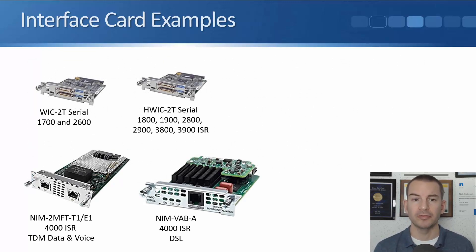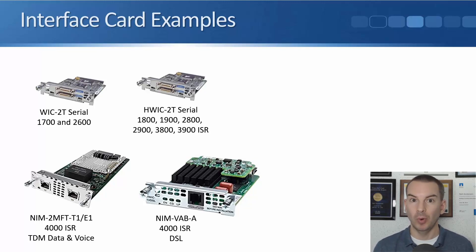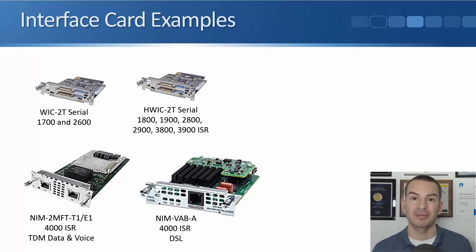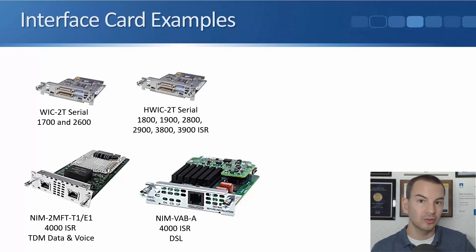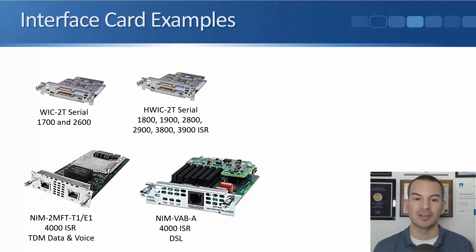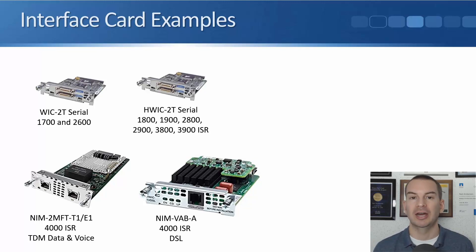To give you an example, at the top we've got a couple of serial cards. We've got the WIC-2T, which is compatible with the 1700 and 2600 platforms, and next to that the HWIC-2T, which is compatible with the 1800, 1900, 2800, 2900, 3800, and 3900 ISRs. Looking at these two, they look exactly the same — they're both for serial connections, which we would often use for slower speed leased lines or Frame Relay. But one fits one type of platform and the other fits different platforms. If you order a WIC-2T instead of the HWIC-2T it won't work, so be really careful when ordering because often there's just a single letter or number difference but there's no compatibility.